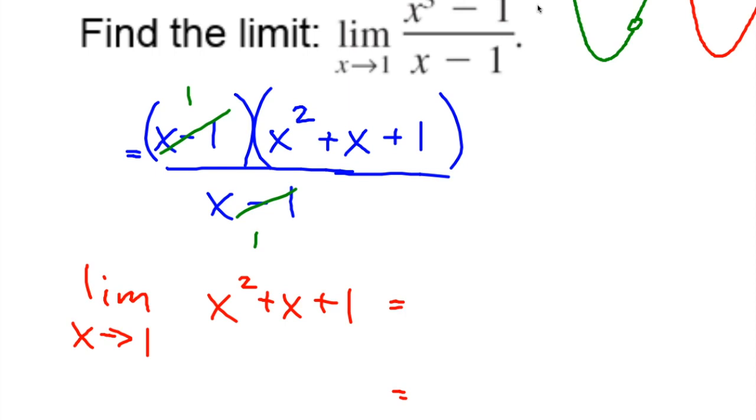And now the graph of this actually looks like this. So instead of having this hole in our function, now we've represented it with a function that is defined at that spot. So now it becomes easy - all we have to do is use a little direct substitution and it allows us to come up with our limit.